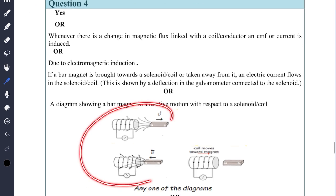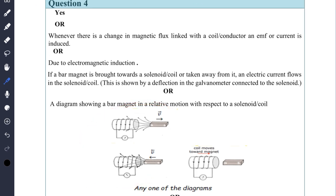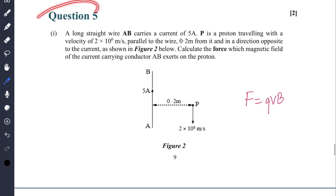Question number five: whenever you are given numericals, please mention the given quantities. For example Q, V, and B. You will be able to answer the numerical easily. Calculate the force, so the formula was F equals QVB.